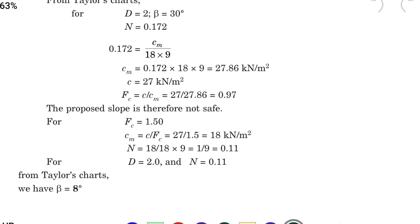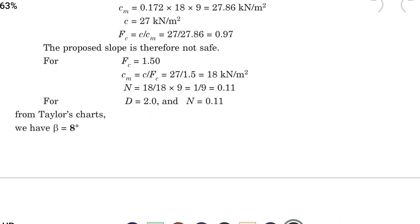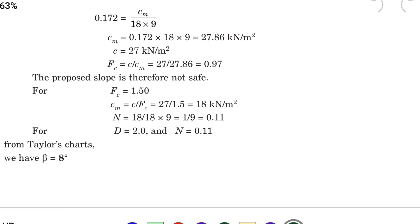So for the value from the Taylor chart beta angle is 8 degree. So the safe slope is 8 degree. So this is the method we can solve the problem. Again we will see in next video. Thank you.